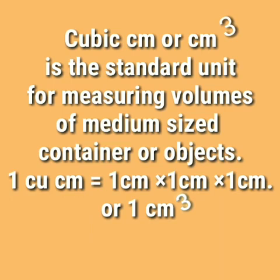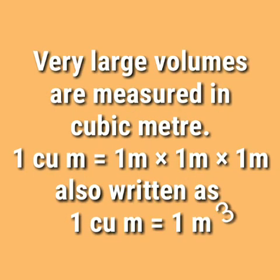Cubic centimeter, or centimeter to the power three, is the standard unit for measuring volumes of medium-sized containers or objects. One cubic centimeter equals one centimeter × one centimeter × one centimeter. Very large volumes are measured in cubic meters. One cubic meter equals one meter × one meter × one meter, also written as one meter to the power three.